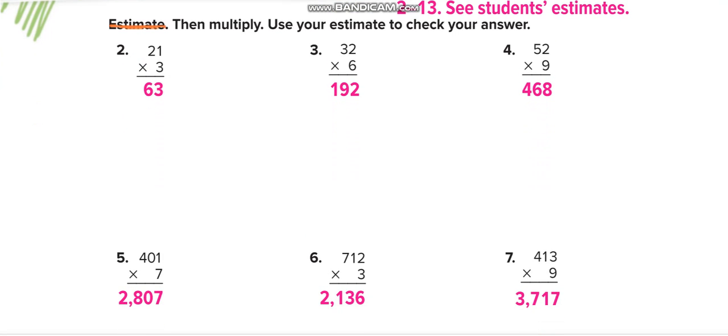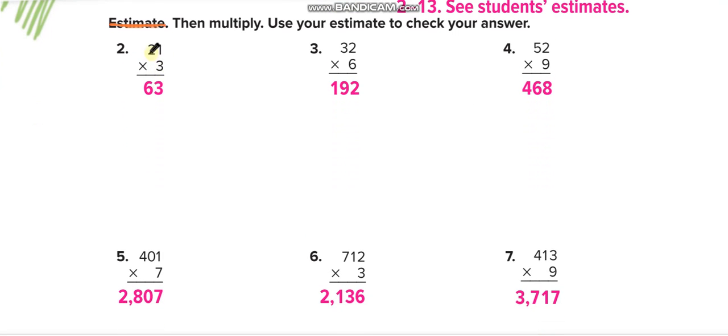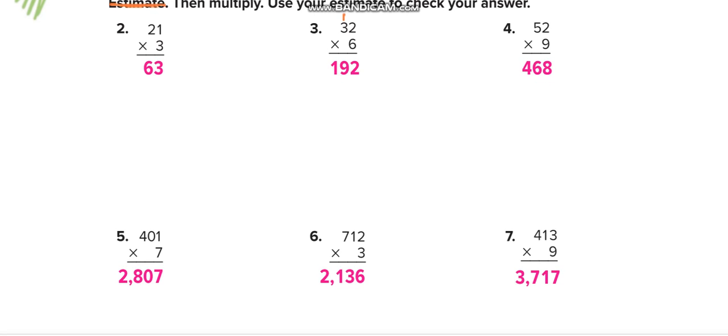Remaining all solve by yourself and then you can match your answers from this video. Here: 3 times 1 equals 3, and 3 times 2 equals 6. 6 times 2 equals 12, 2 here, 1 up. 6 times 2 equals 12, 12 plus 3 equals 18, and the 1 up equals 19. 192.